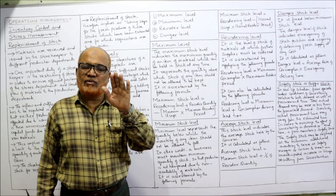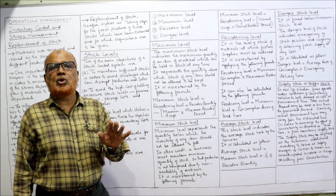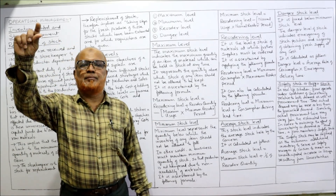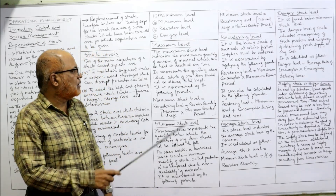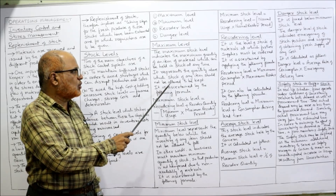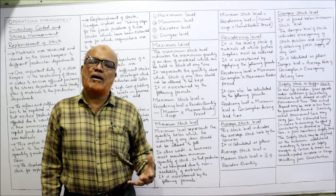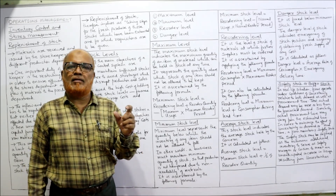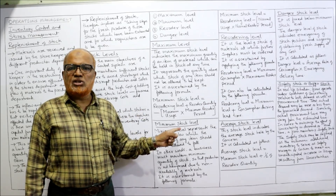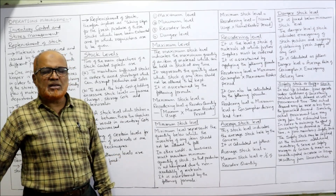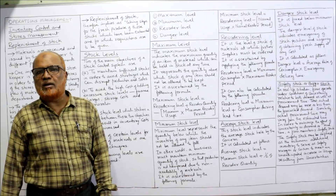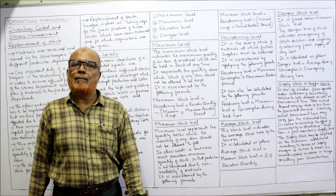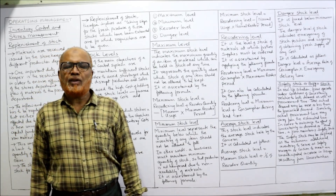Our objective is to minimize cost, so overstocking should not occur. The maximum stock level is the highest quantity of material beyond which stock should not be allowed to go. The formula to calculate maximum stock level is: Maximum Stock Level = Reordering Level + Reordering Quantity − (Minimum Usage × Minimum Reorder Period).